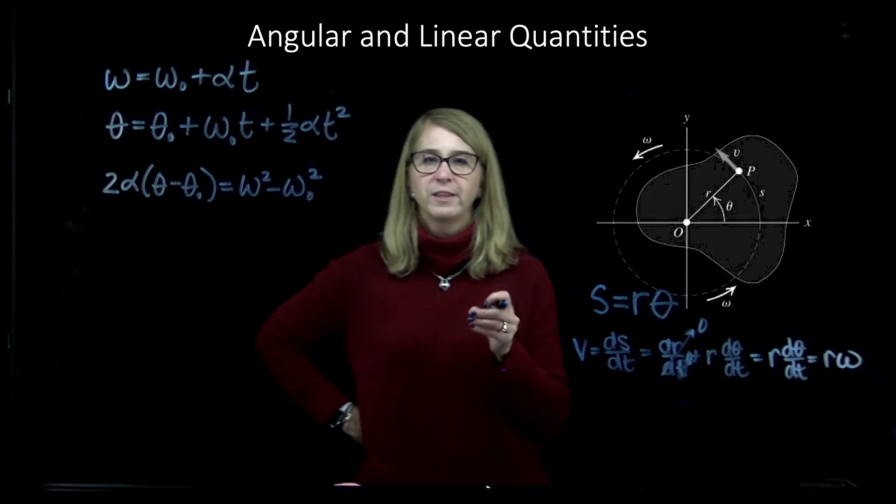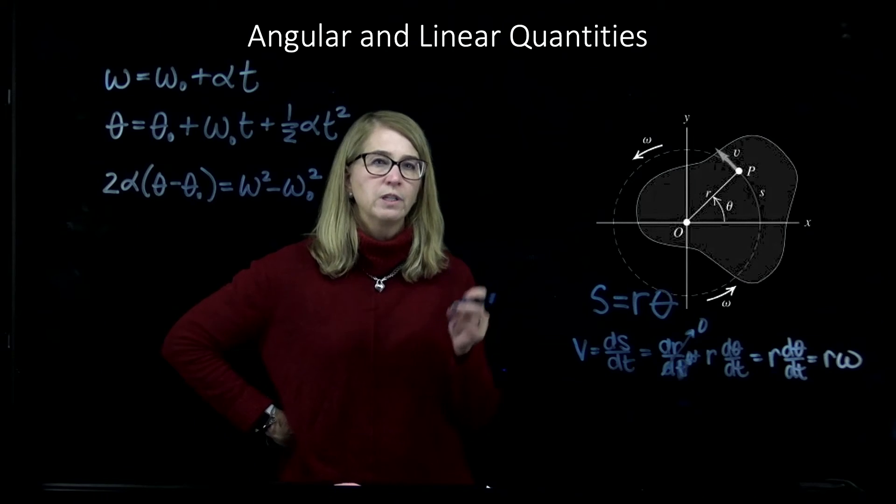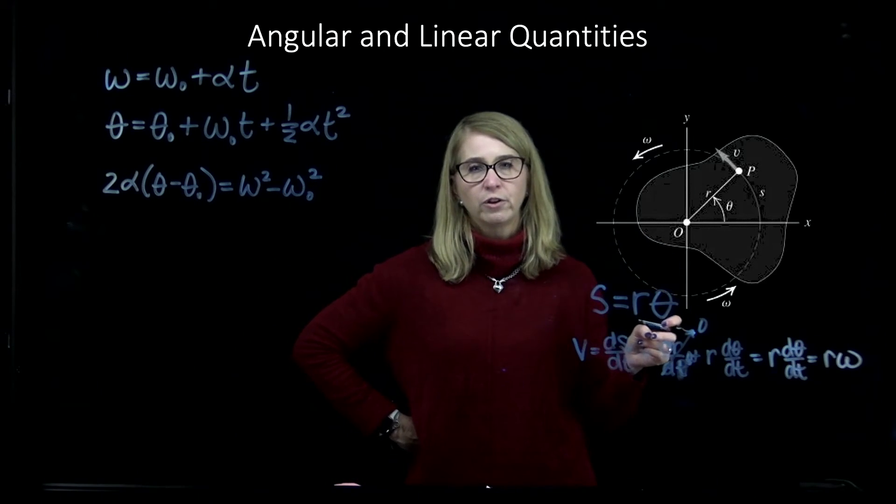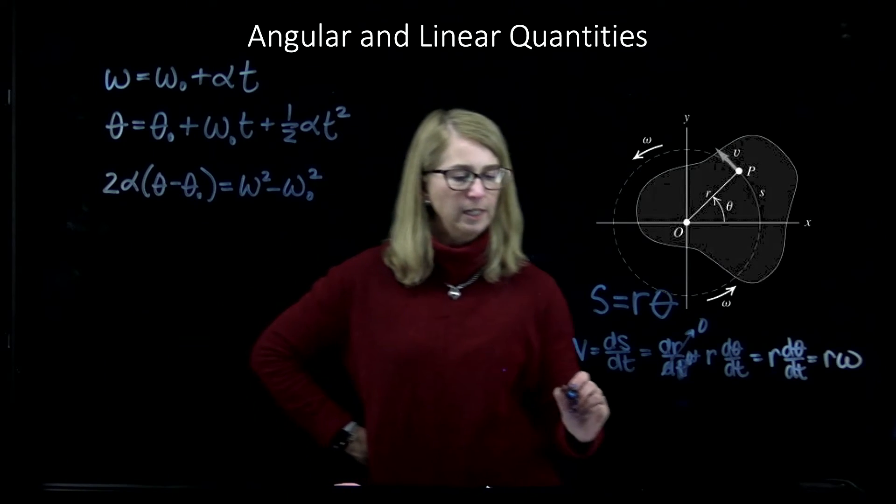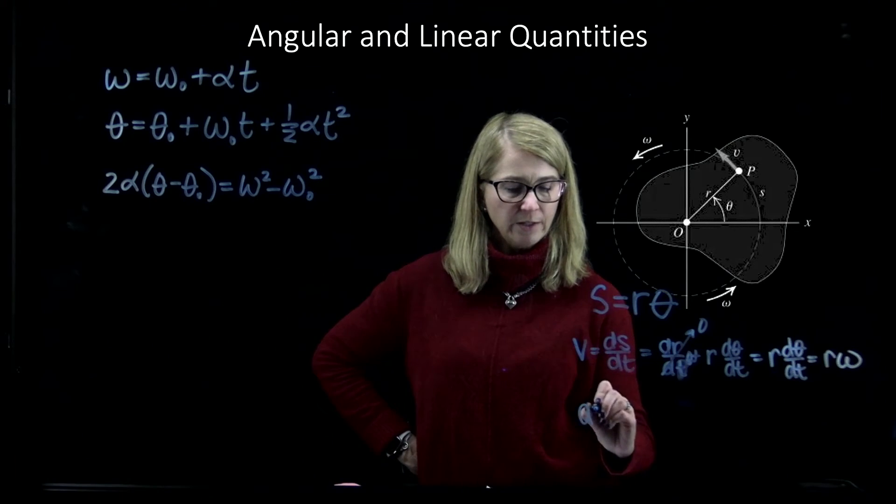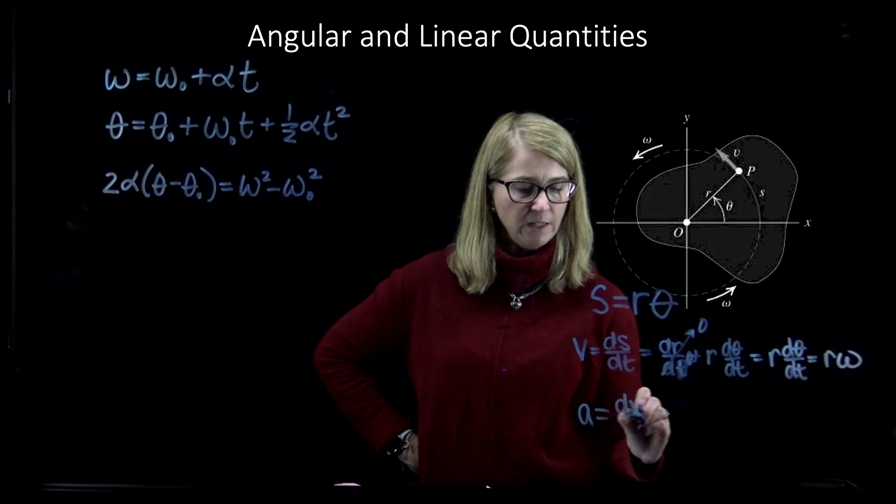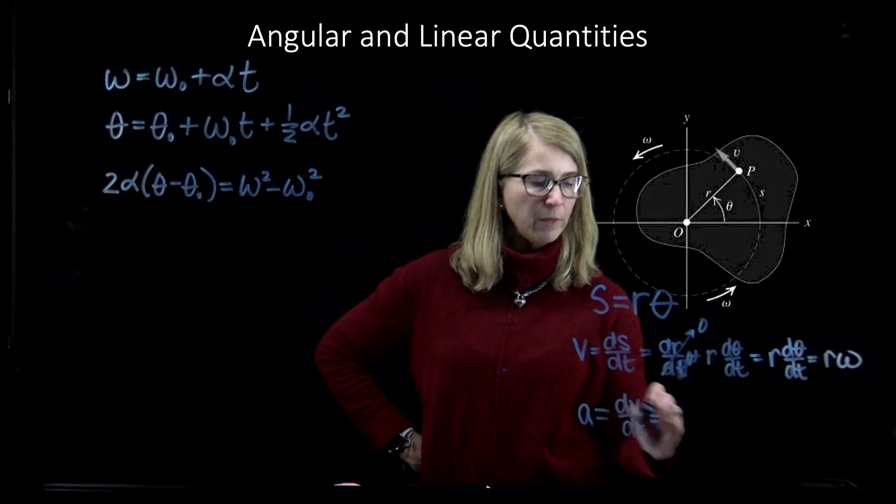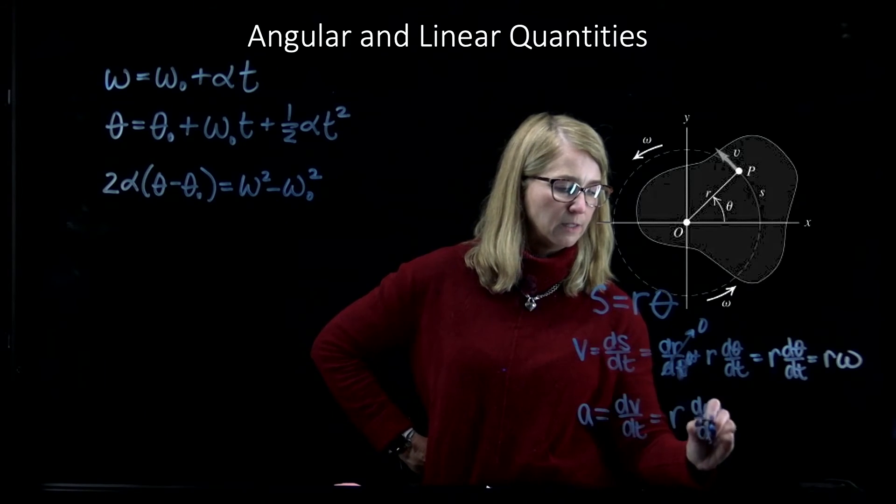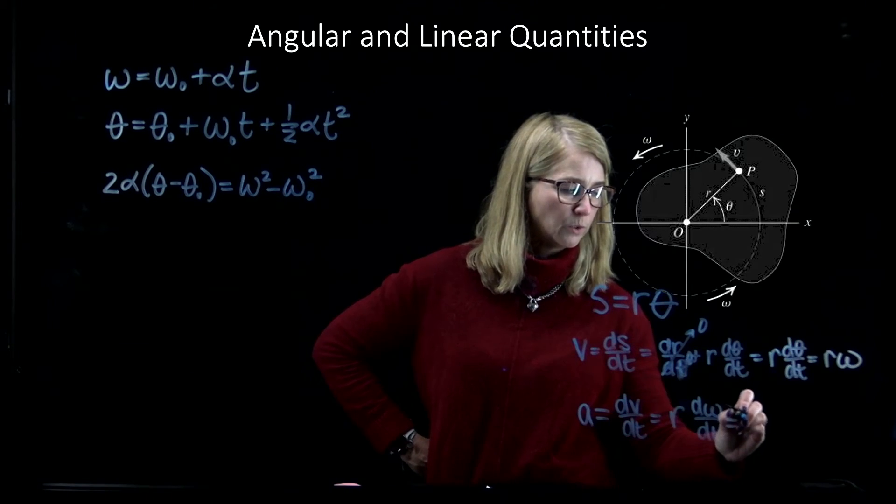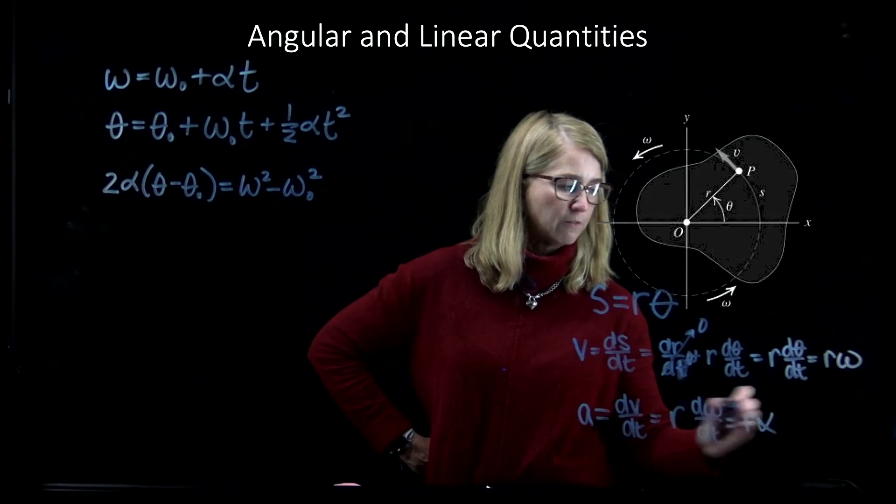Again, the velocity, the translational velocity v, is equal to the angular velocity omega times the radius. And then we could do it again if we took the acceleration, which was dv dt, and remembering that the r is constant, it would be just r times d omega dt, which is just equal to r times alpha.